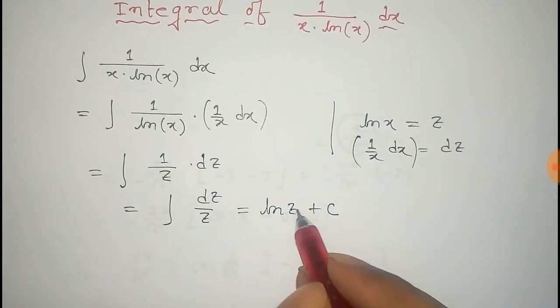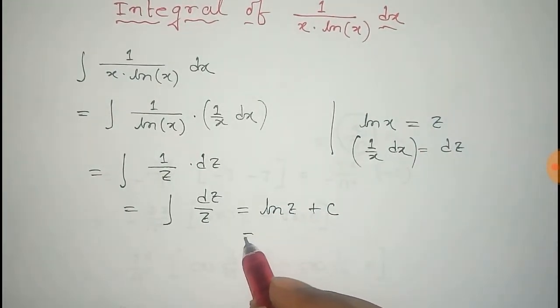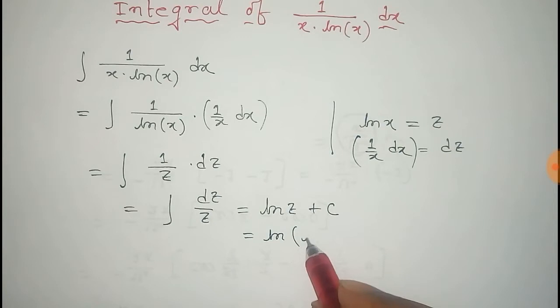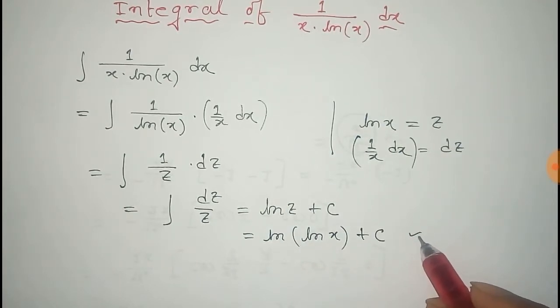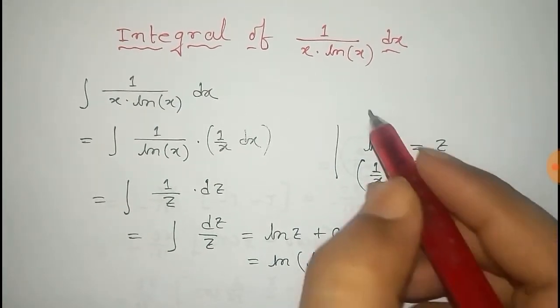Now we have to put the value of z there that is log x. So that is equals to log of log x plus c. So we get the integral of 1 by x log x dx.